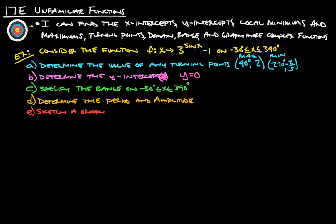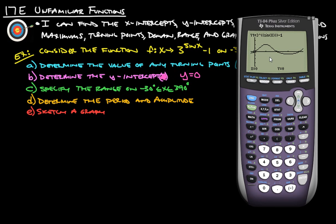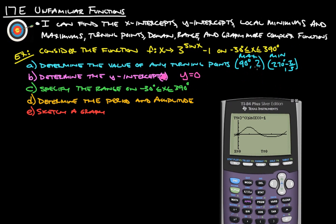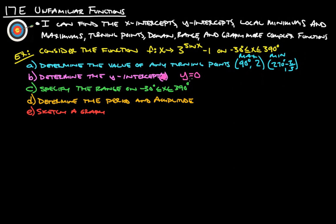Specify the range from negative 30 to 390. So the range, remember, is how high and how low this will go. So it's basically going to be from the top to the bottom. Guess what? We already figured that out. It goes up to 2 and down to negative 2 thirds. So we can say that our range is, let's start with the negative 1, let's go from negative 2 thirds to 2 is our range.